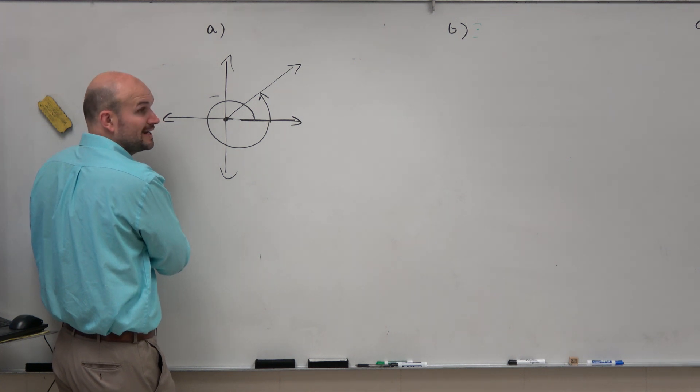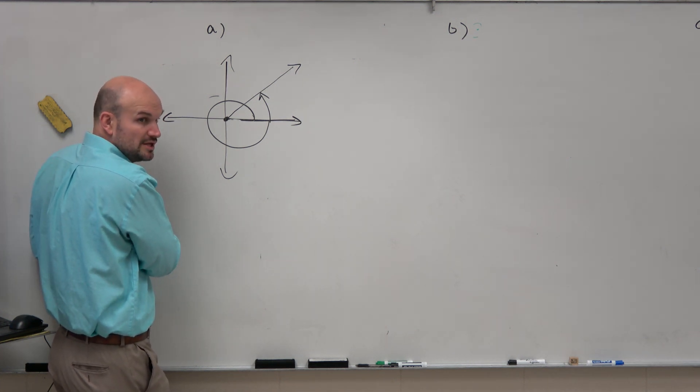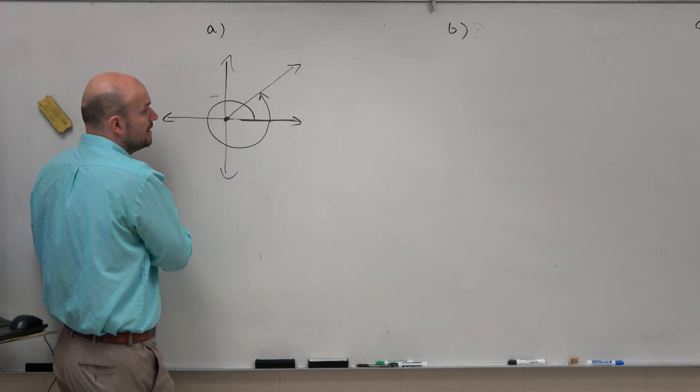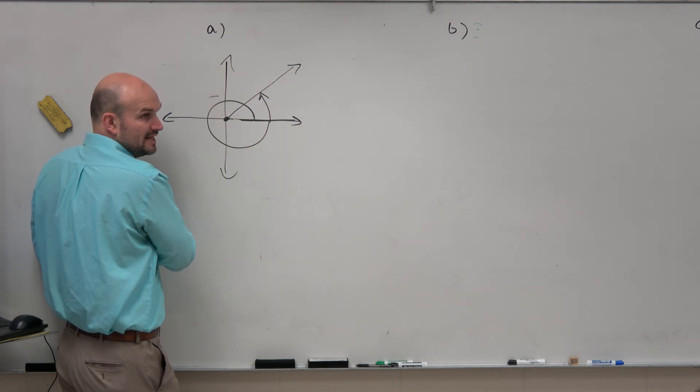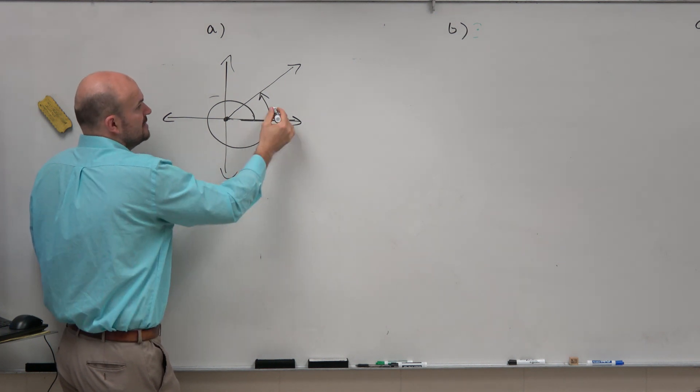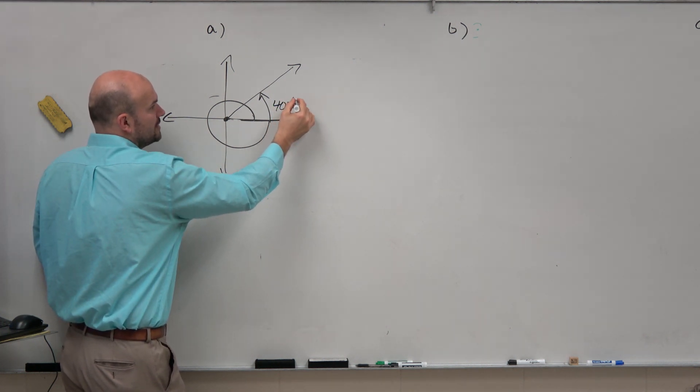So just make sure when you're drawing your angle, you can have angles that are larger than one revolution, going all the way around. Just make sure you have the direction, and then obviously you're showing the arrow. So that is my 400 degrees.